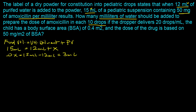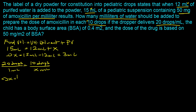Next, we need to determine how much amoxicillin is present in the 10 drops. We'll convert 10 drops to milliliters using the 20 drops per mL conversion factor. Setting up a proportion: 20 drops = 1 milliliter, so 10 drops = x milliliters. Solving: x = (1 mL × 10 drops) ÷ 20 drops. The drops cancel out, giving 0.5 milliliters.